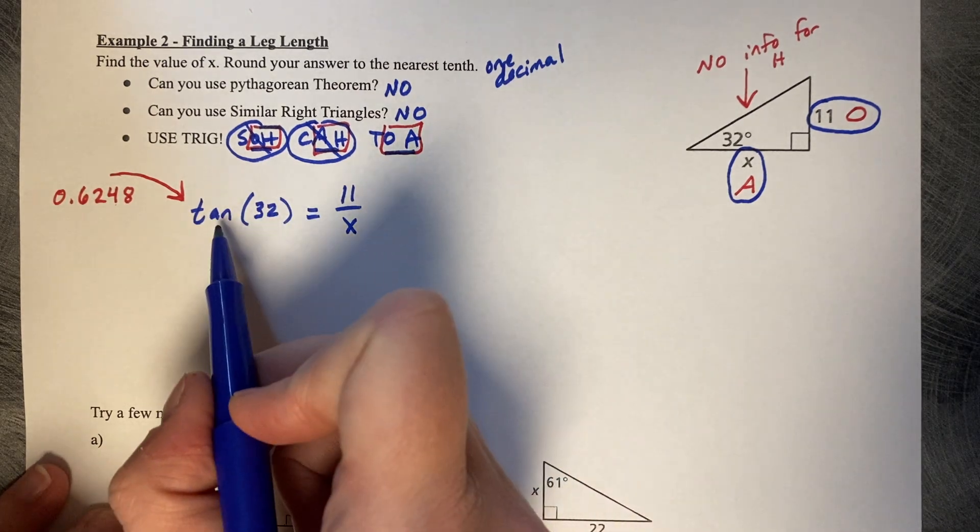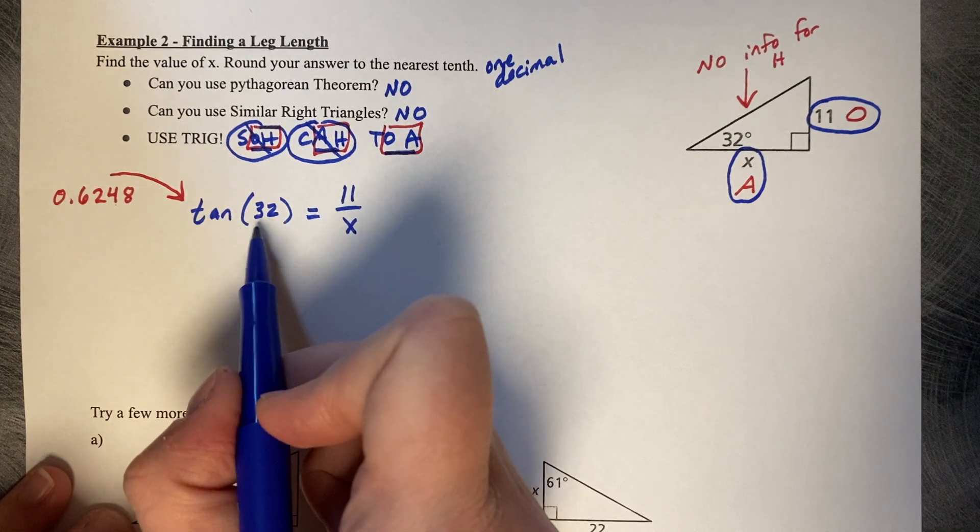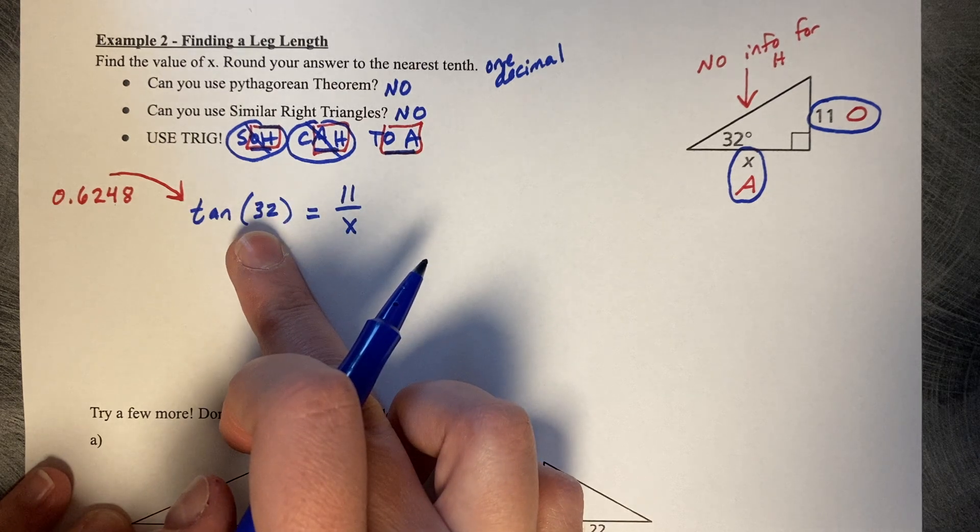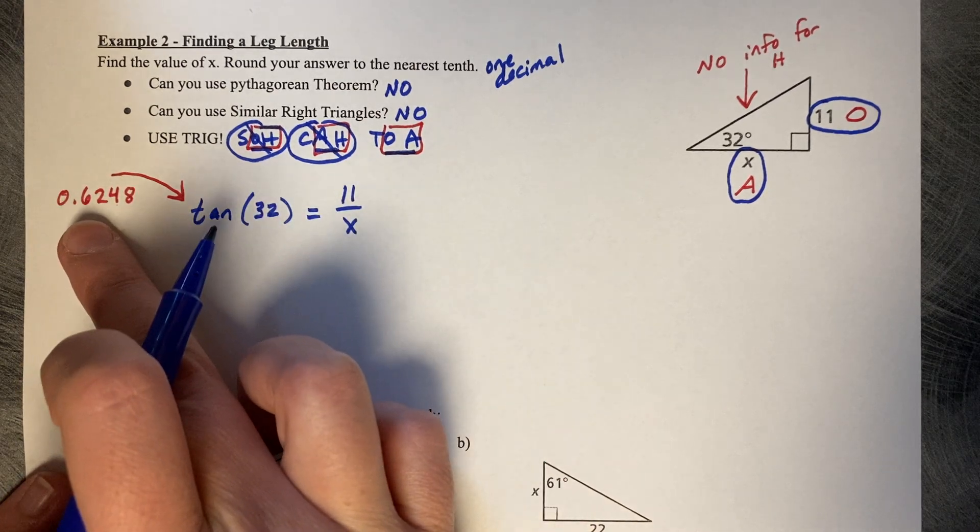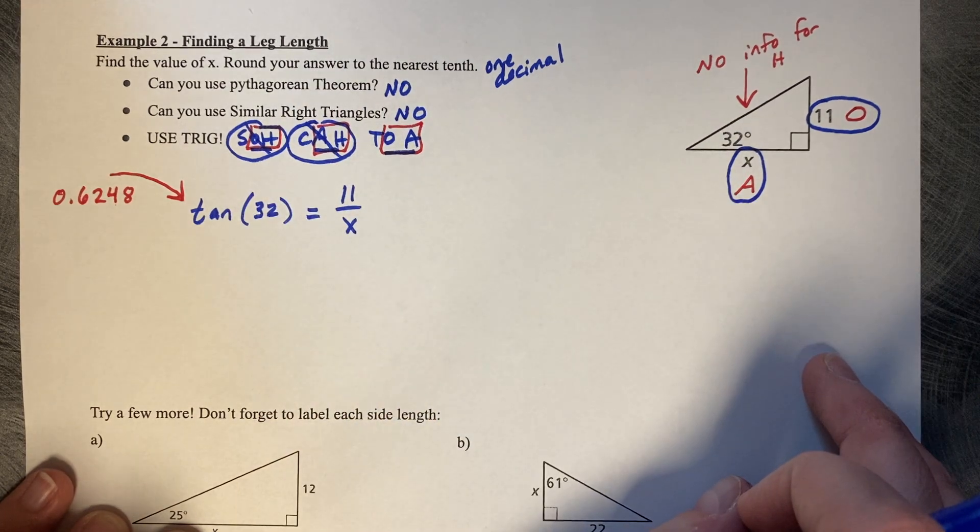What you do need to remember is that these three letters, TAN, do not break away from the 32. You can't just work with the 32 alone. 32 and 0.6248 are not even close to the same value.